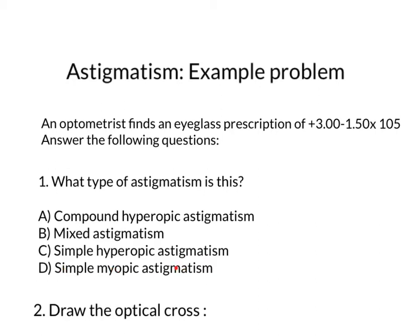I encourage you to take a moment to think about what the answer might be. The answer is A — compound hyperopic astigmatism. You might think it could be mixed astigmatism or simple hyperopic astigmatism because there are two different numbers — a positive number and a minus number — but you have to draw out the optical cross.